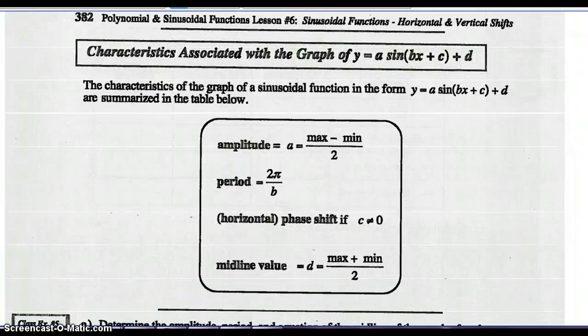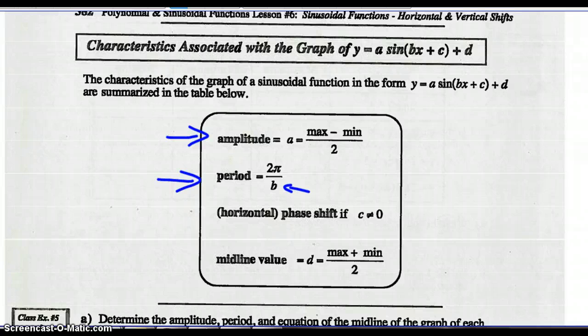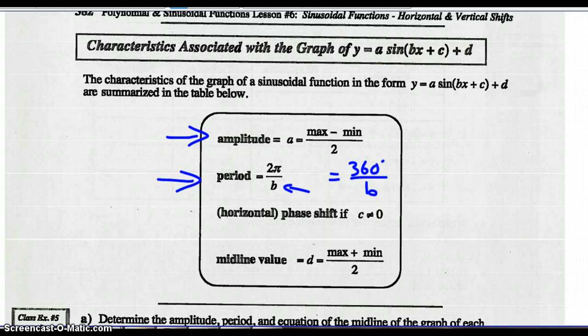Characteristics associated with all four parameters a, b, c, and d: amplitude is the a value; period is affected by b — it is 2π divided by b in radians, or 360 degrees divided by b in degrees; horizontal phase shift occurs if c is anything but zero; and the midline value is d.